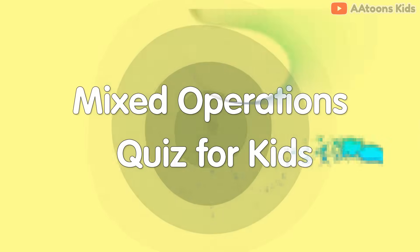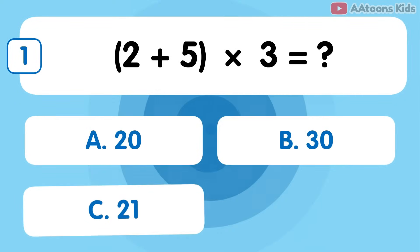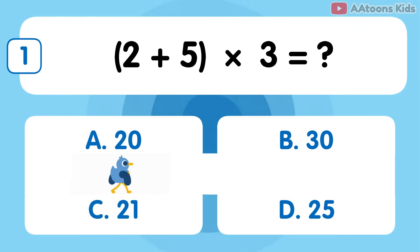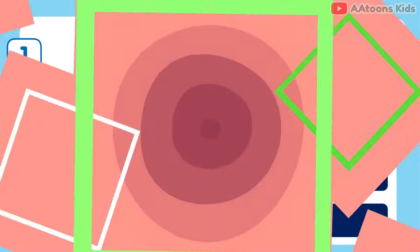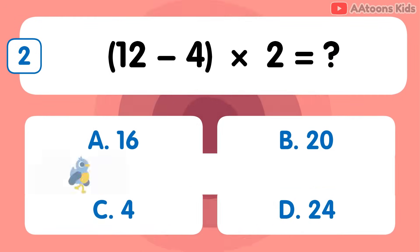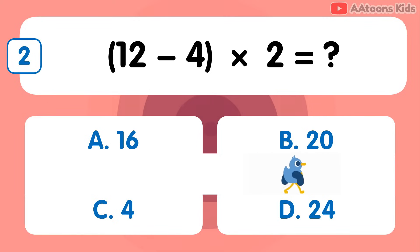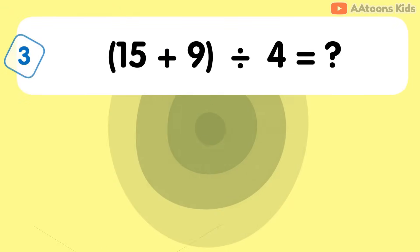Mixed operations quiz for kids. 2 plus 5 multiplied by 3 is 21. 12 minus 4 multiplied by 2 equals 16. 15 plus 9 divided by 3 is 6.